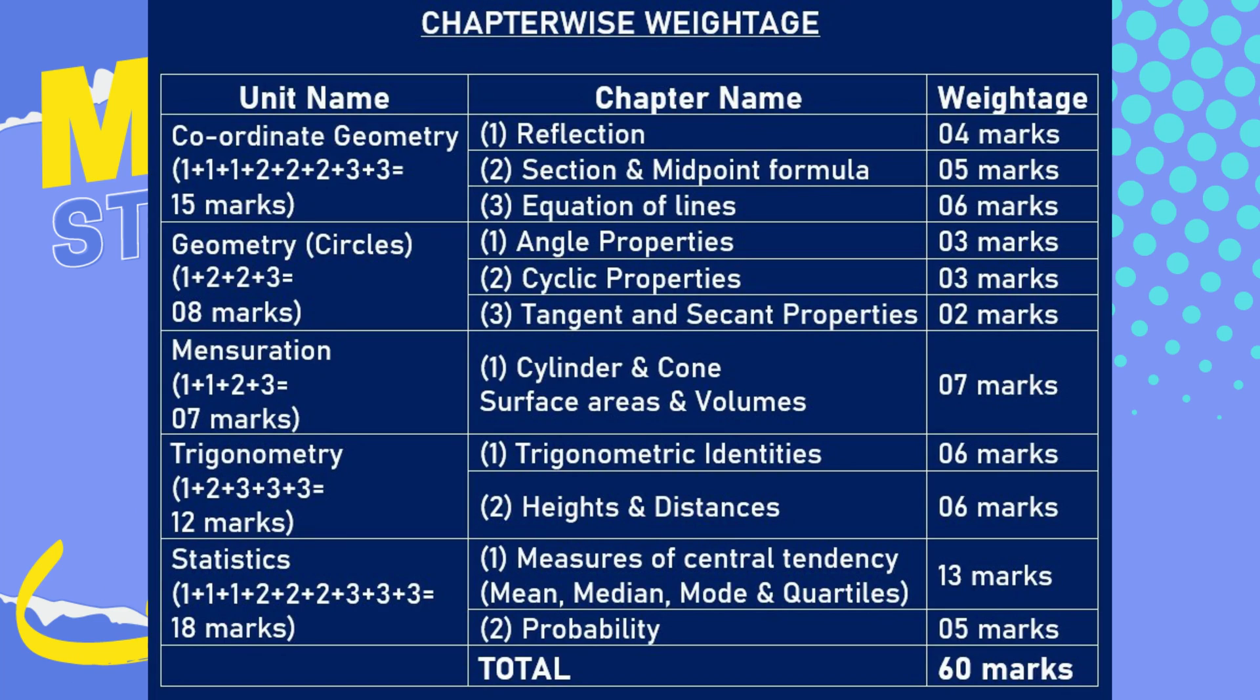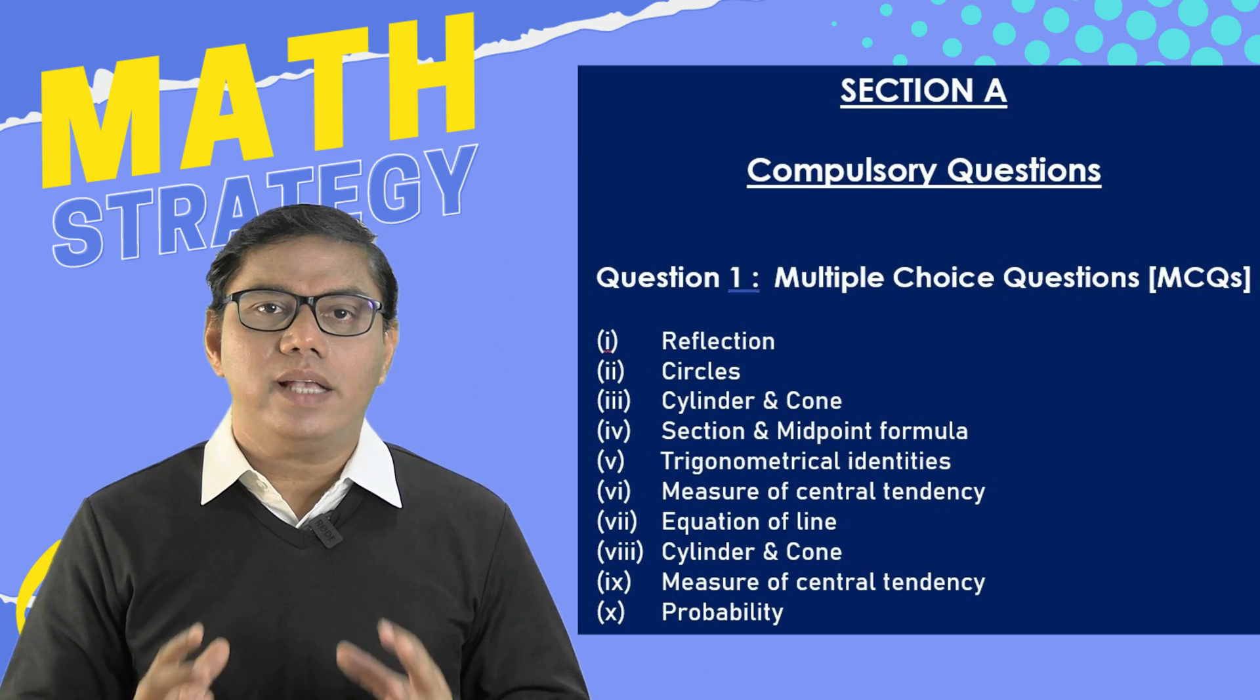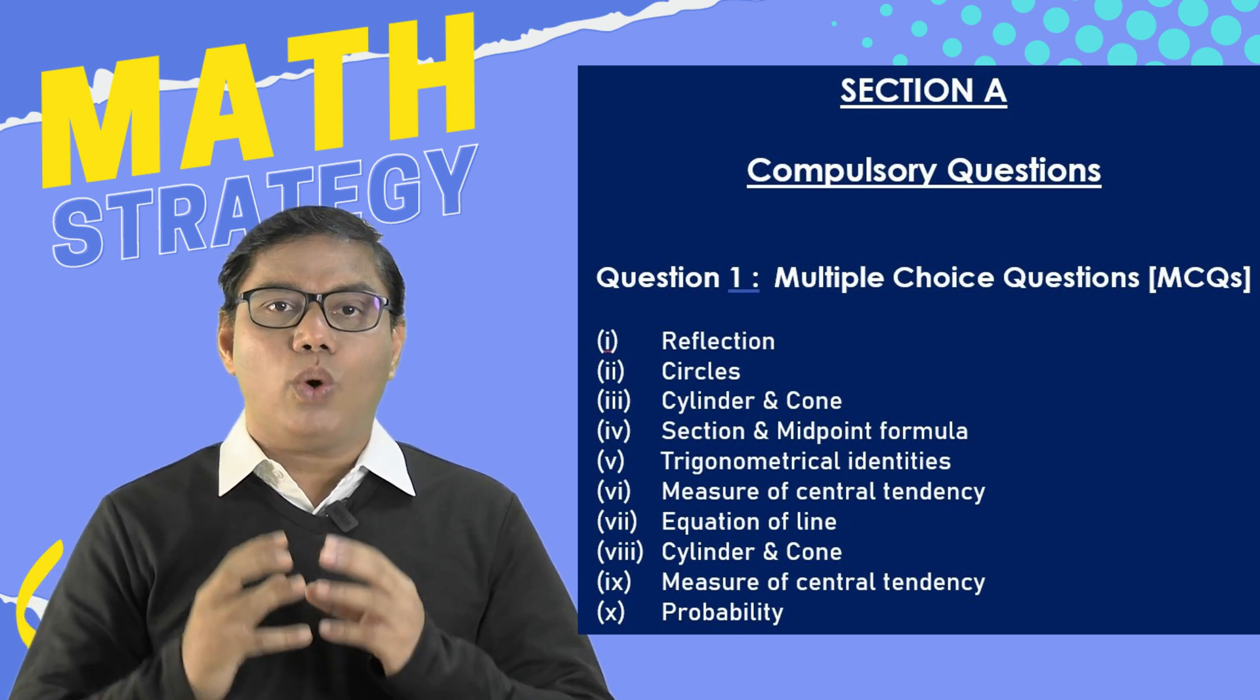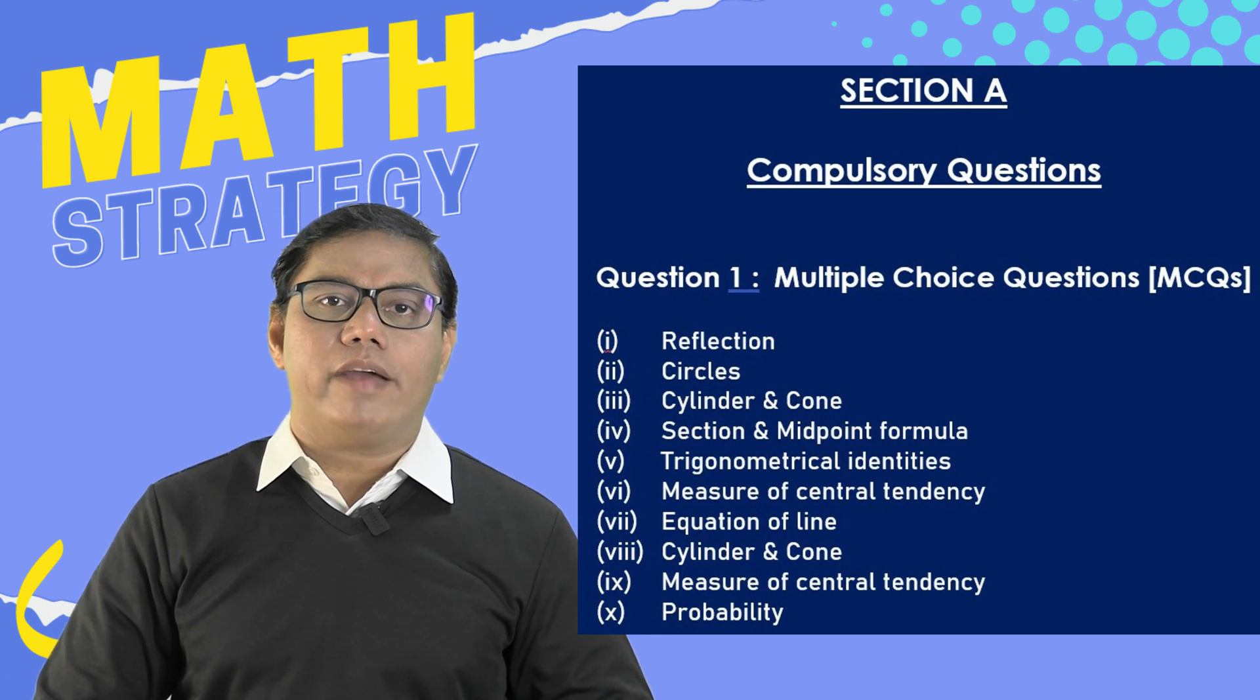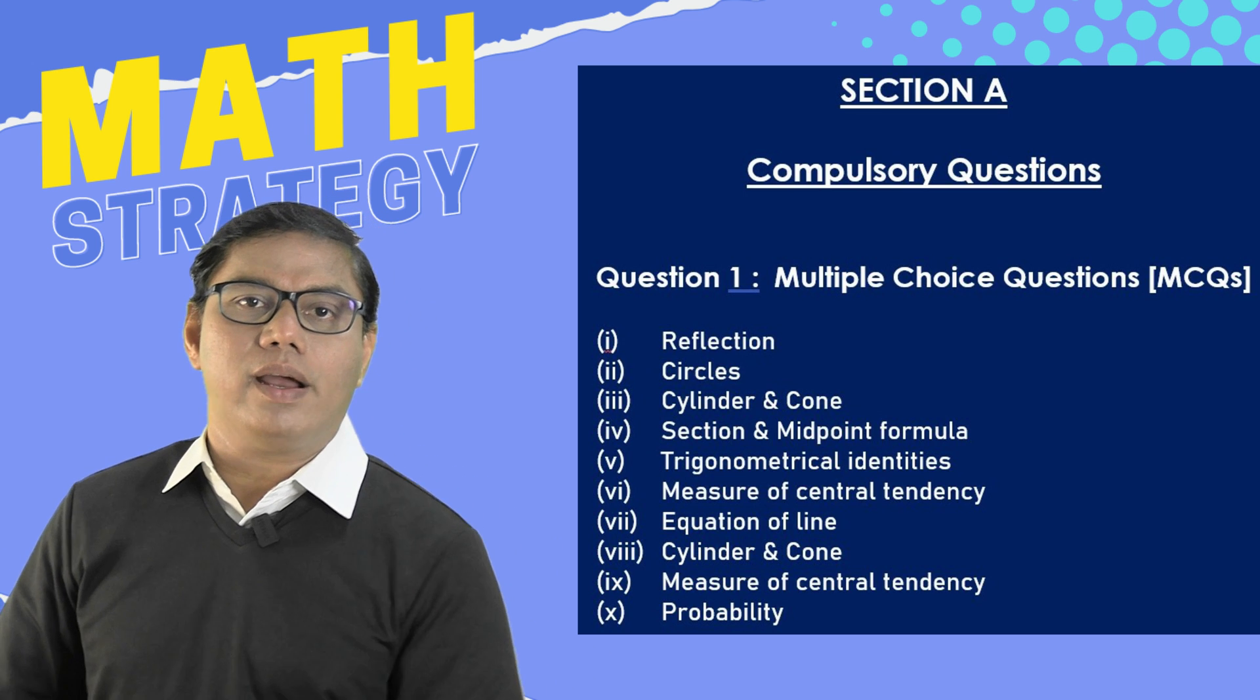But as I told you, most of the questions are time consuming. So we have to find out the ways by which we can save our time. If you see the pattern of the question paper, question number one is a compulsory question MCQ. This is the important question. We can save time over here. So that whatever time we have saved in this question number one, we can give it to the other difficult question, which is time consuming.